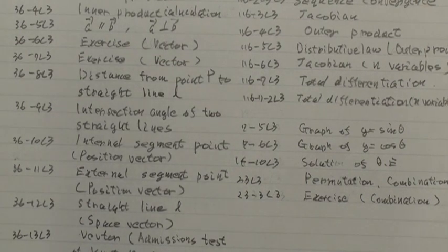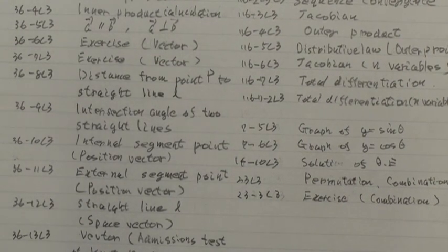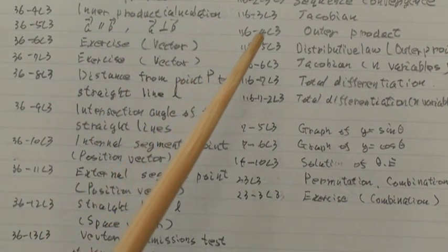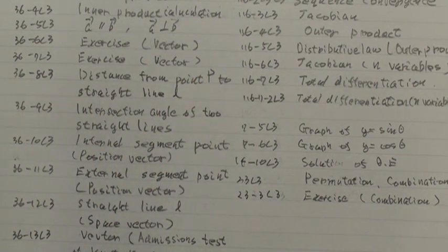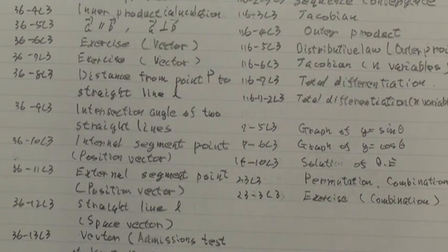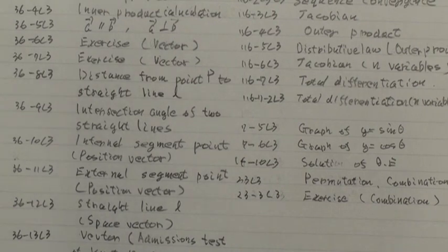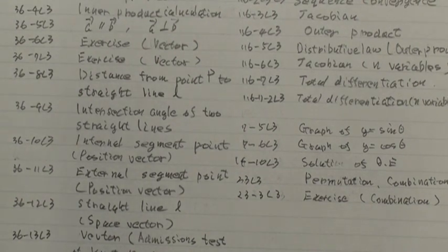116 branch TLT, Distributive Law, Outer Product. 116 branch TLT, Jacobian, N Variables.